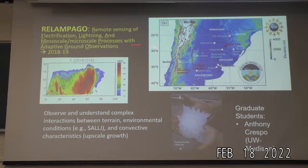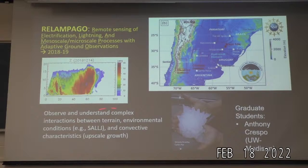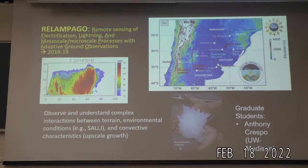My research is examining the role of topography and environmental conditions — in particular, my student at Washington just published new insights about the South American low-level jet. We're taking that further to understand its relationship with topography and the rapid upscale growth. My student here, Anthony Crespo, is heading back to Argentina to examine hailstones collected from a citizen science network, cutting them open, analyzing chemistry and physical characteristics, and relating that back to modeling.